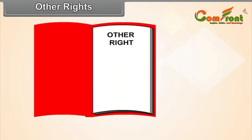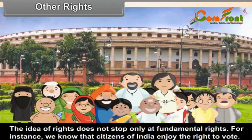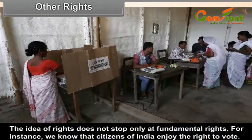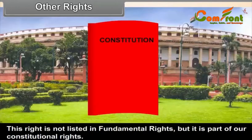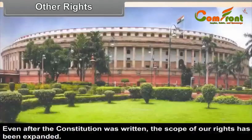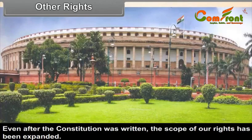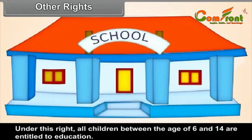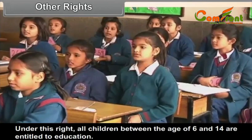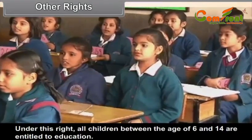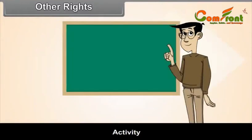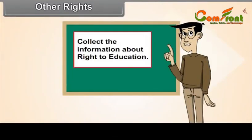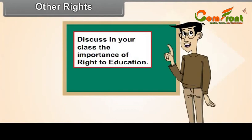Other Rights. The idea of rights does not stop only at fundamental rights. For instance, citizens of India enjoy the right to vote, which is not listed in fundamental rights but is part of constitutional rights. Even after the Constitution was written, the scope of our rights has been expanded. For example, we now have the right to education, under which all children between the age of 6 and 14 are entitled to education. Activity: Collect information about the right to education and discuss in your class its importance.